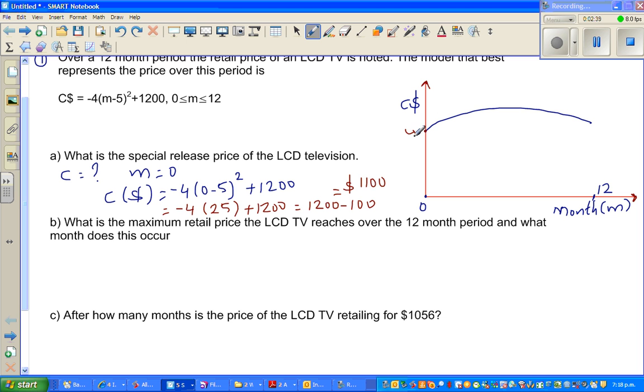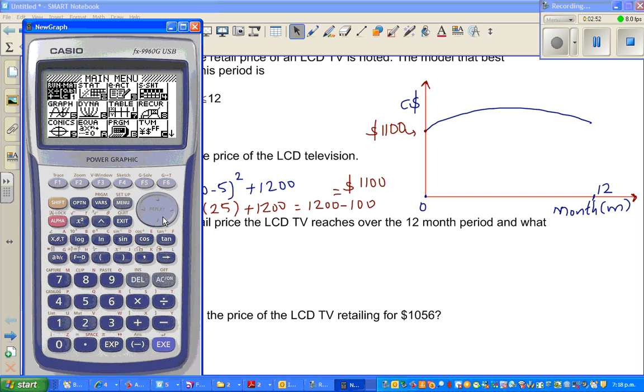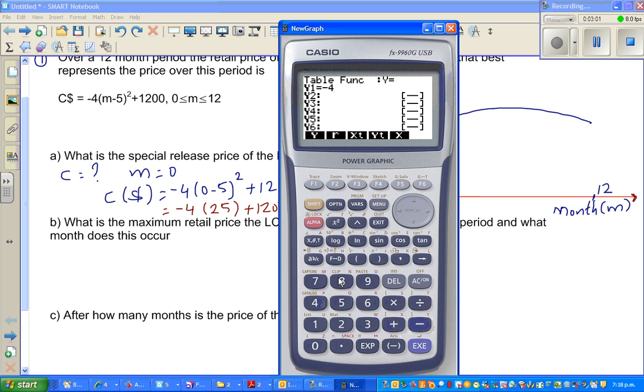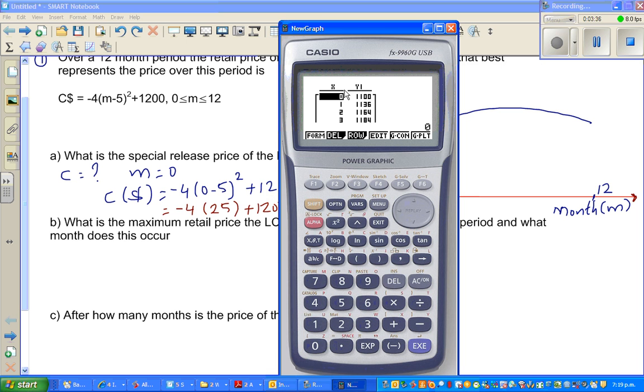I'll show how to draw this on a calculator. So if you have a graphic calculator, go to table menu and type in this equation minus 4 times, instead of m you can type in x, minus 5 squared plus 1200. This is the equation, m has been replaced by x. And then you have to set from 0, m is 0 to 12, and step is 1. This means the x values will go from 1 to 12 in step of 1.